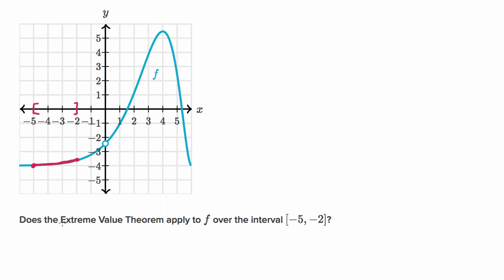Because the function is continuous over this closed interval, we know that the extreme value theorem does apply — there is a well-defined minimum and maximum value. The maximum value happens at f of negative two, which looks like it's around negative 3.5 or so, and the minimum value looks like it happens at f of negative five, close to negative four, since the function appears to be increasing over the entire interval. The important thing here is that continuity does not have to apply to the entire function or its entire domain — it just has to be true over the closed interval that we are trying to apply these theorems to.